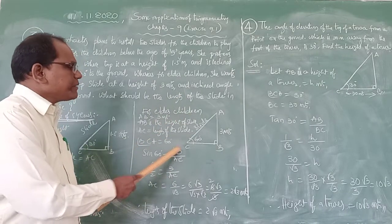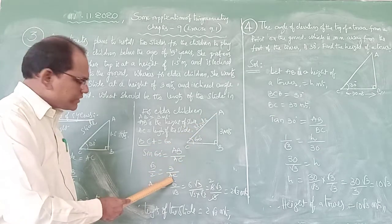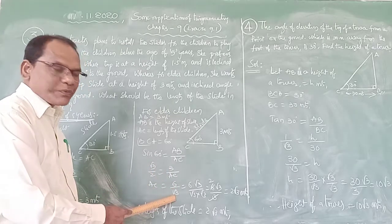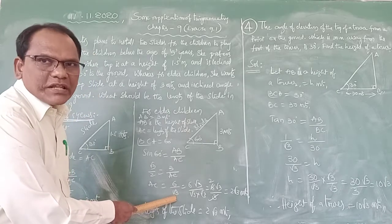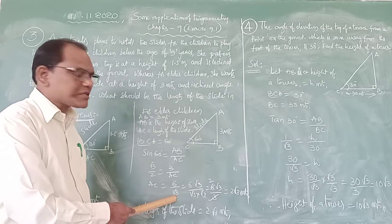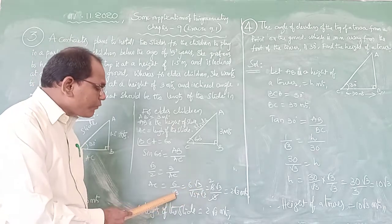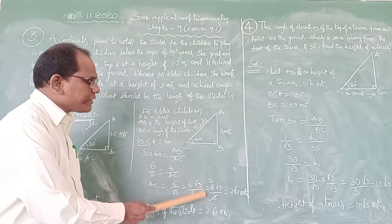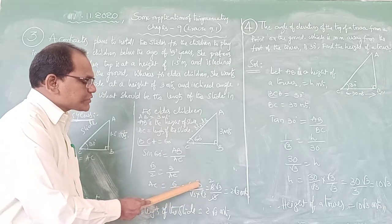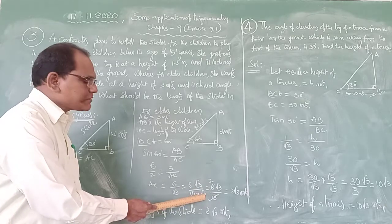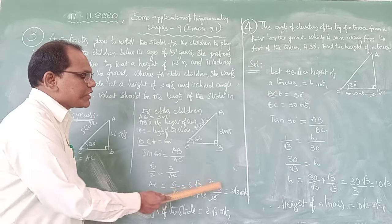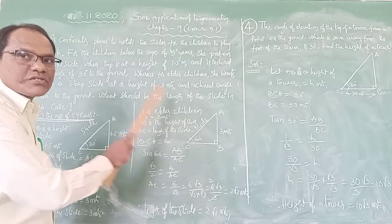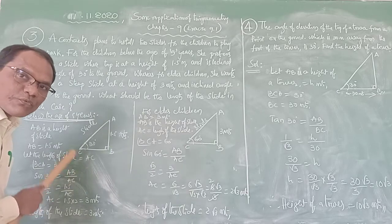Using sin 60° = √3/2, and AB equals 3 meters: sin 60° = AB/AC, so √3/2 = 3/AC. By cross multiplication, AC = 2 × 3 / √3 = 6/√3. Since √3 is an irrational number, we rationalize by multiplying numerator and denominator by √3: 6√3 / (√3 × √3) = 6√3 / 3 = 2√3 meters. Therefore the length of the slide for elder children is 2√3 meters.